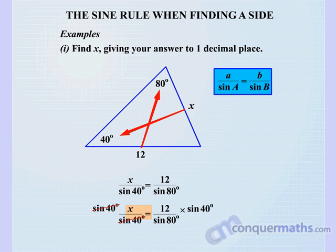So we write, therefore, that x equals – now we need to pull the calculator out to do this one – 12 divided by sine 80, then multiply by sine 40, comes up with 7.8. And that's been rounded off to one decimal place. Excellent, alright, not too hard at all.